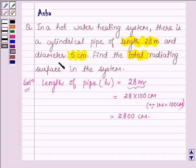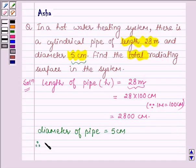Also, we are given the diameter of the pipe is 5 centimeters. Therefore, the radius of pipe, denoted by r, equals 5 upon 2 centimeters.